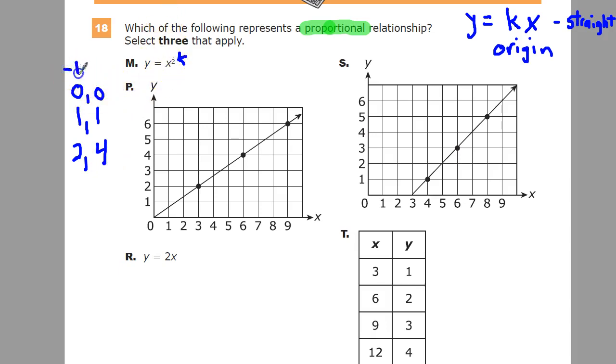But if you do negative 1, well, negative 1 squared is also 1. Negative 2 squared is also 4. So you'll end up with something that looks like this. Not a straight line. So that one is out. Essentially, if it's not linear, which is to say just x, then it's not a proportional relationship. So sorry, M, you are out.